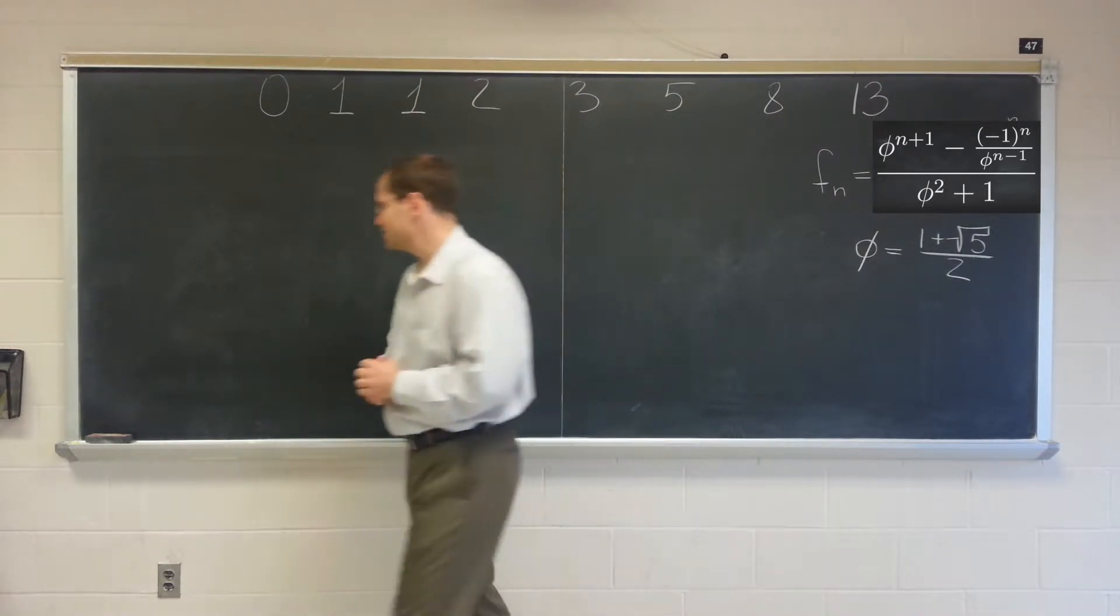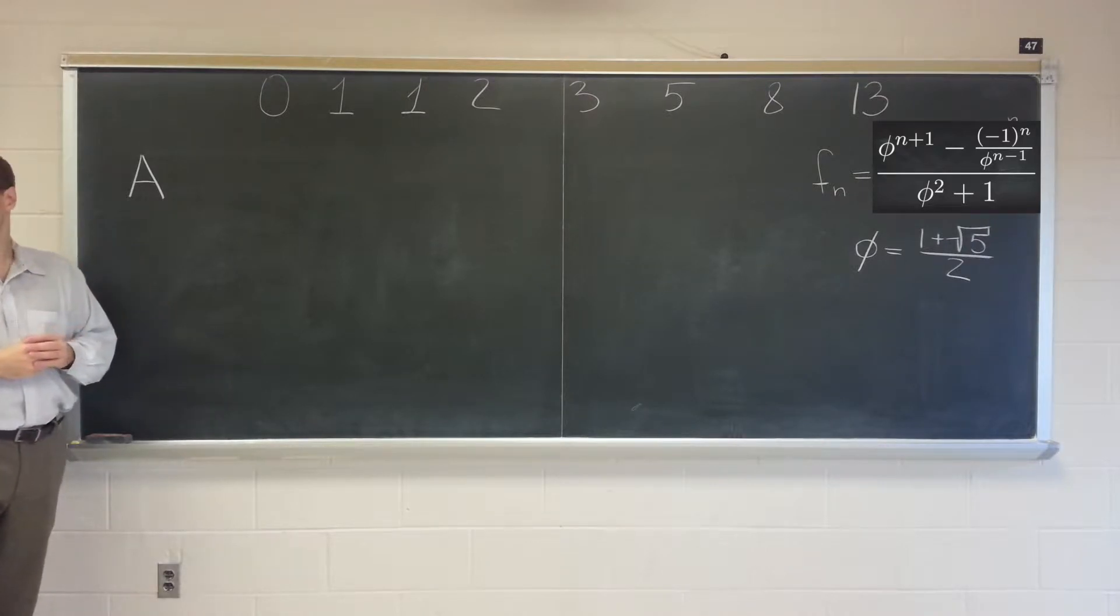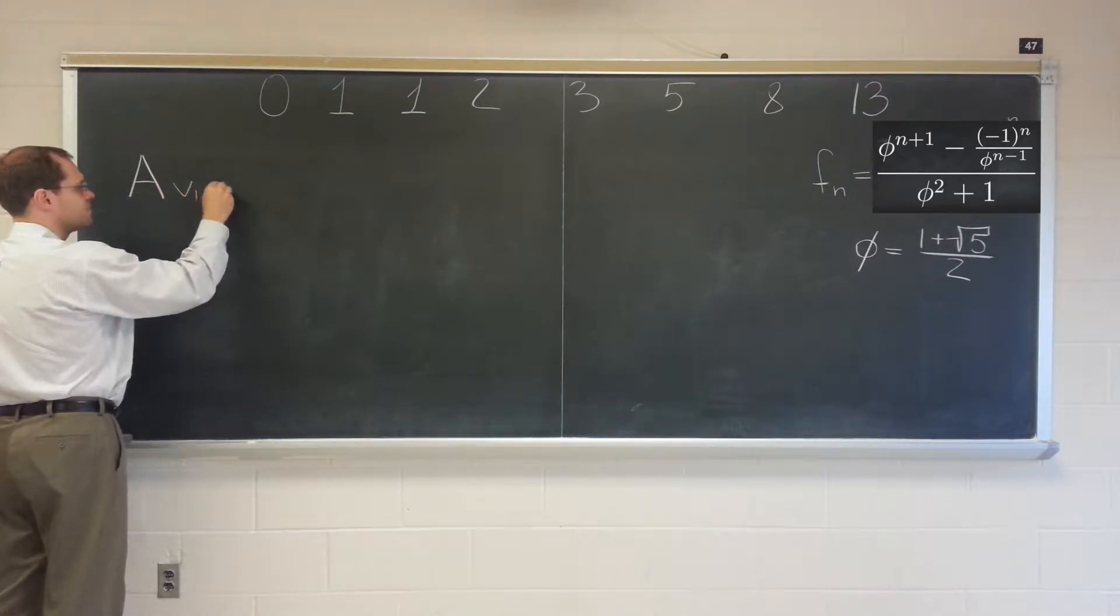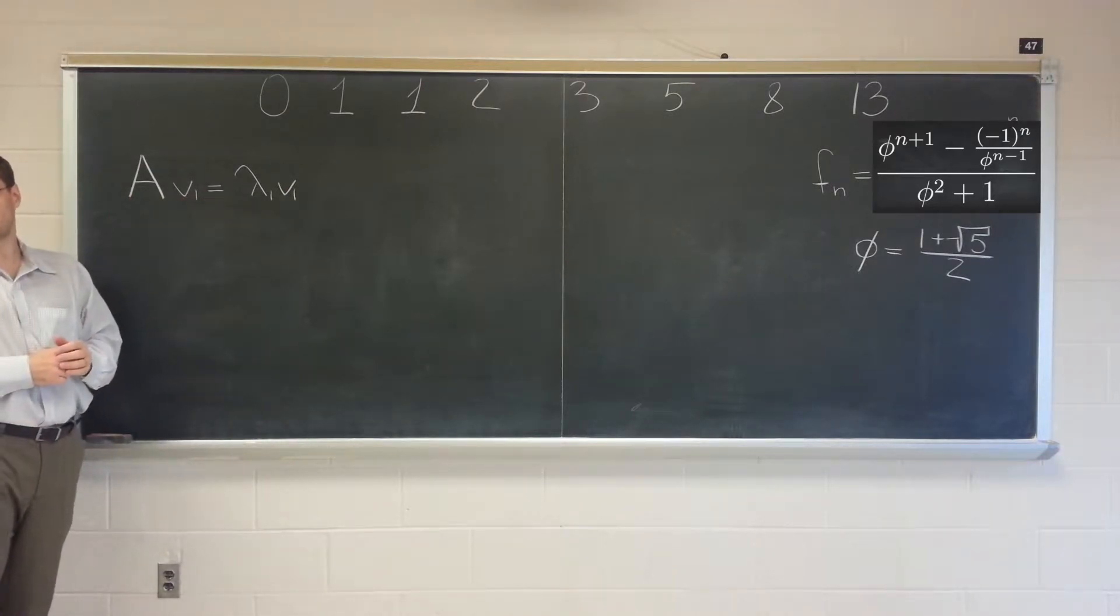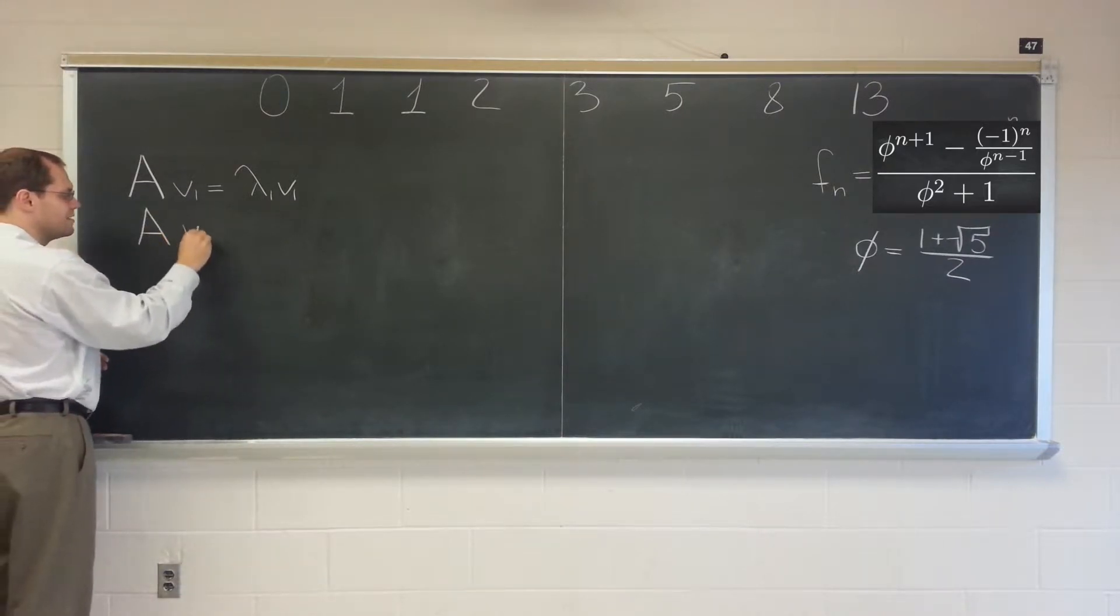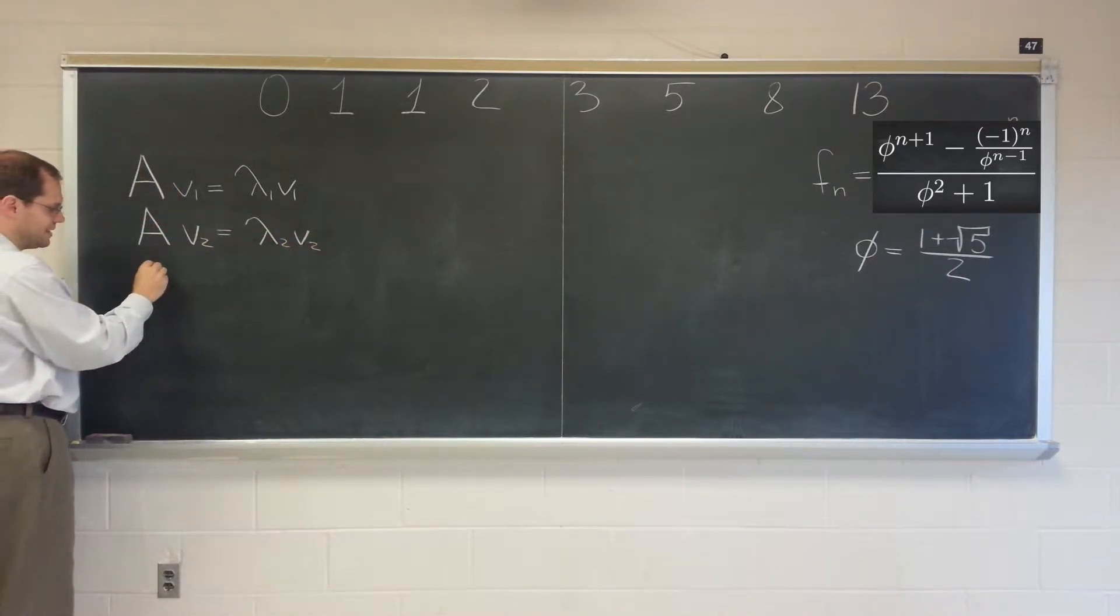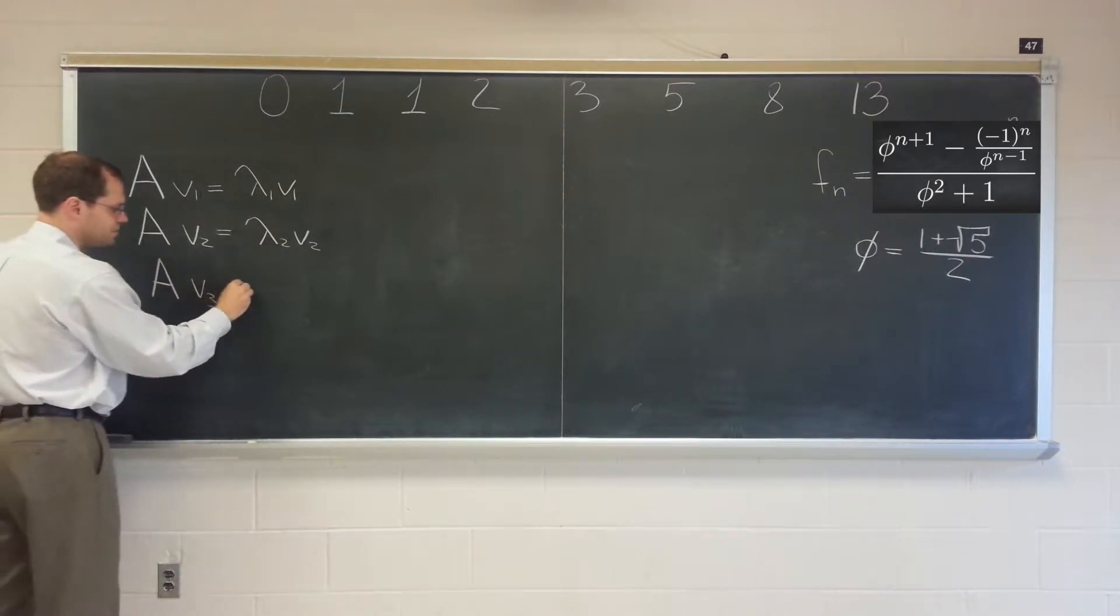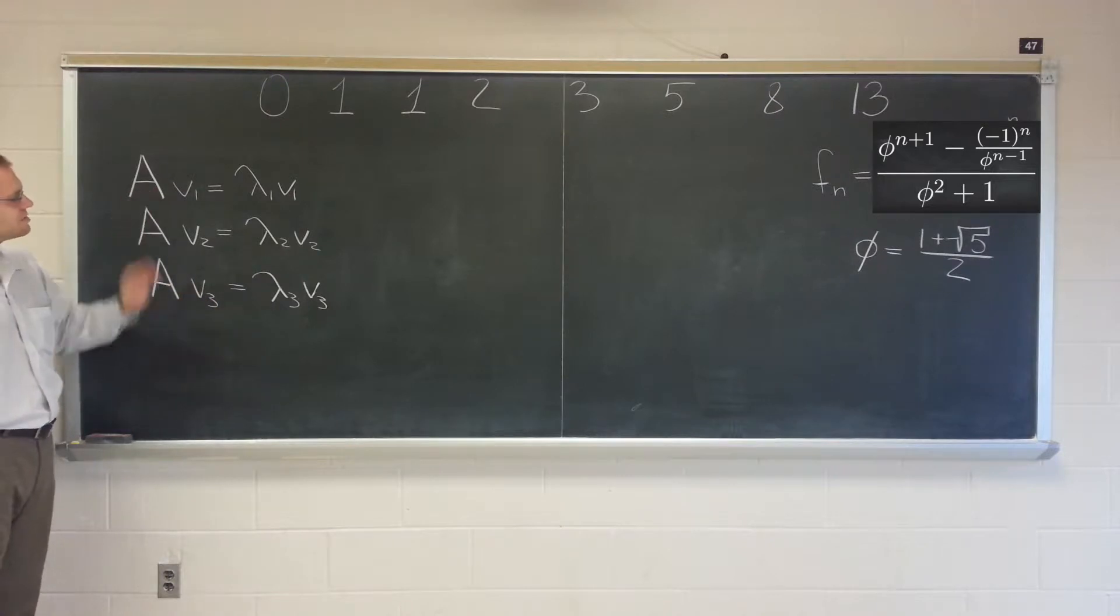So let me remind you what the eigenvalue decomposition is. For a matrix A that's not defective, let's say it's three by three, and it has three eigenvalues, v1, v2, v3, and lambda 1, lambda 2, and lambda 3. So that means that A v1 equals lambda 1 v1. This is saying that v1 is an eigenvector, and lambda 1 is the corresponding eigenvalue. And similarly for v2, A v2 equals lambda 2 v2. And the third one is A v3 equals lambda 3 v3. So these three relationships say that the matrix A, which is three by three, has three eigenvectors and three corresponding eigenvalues.